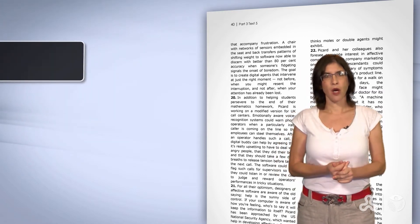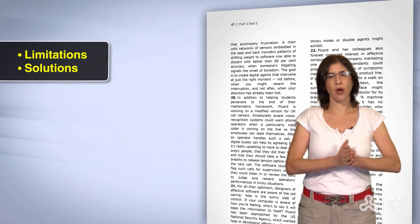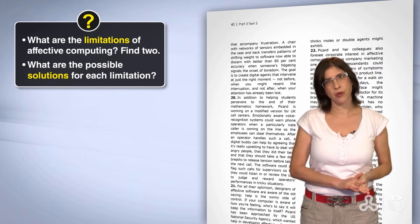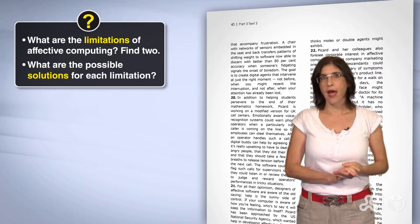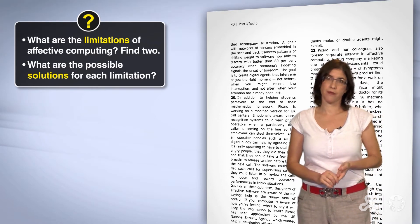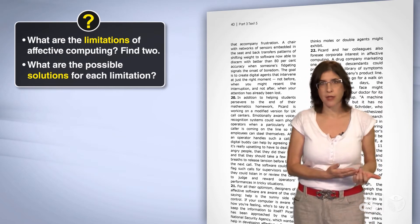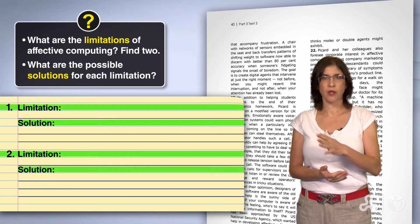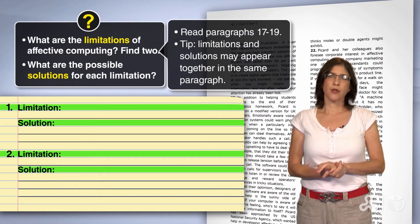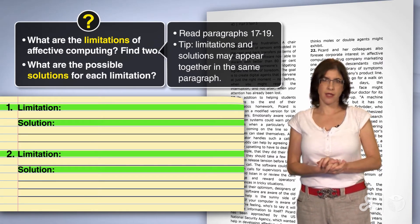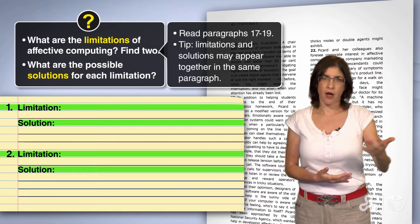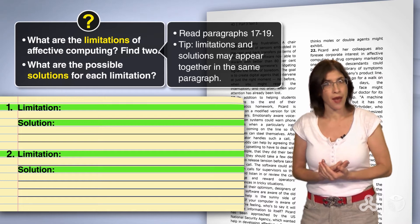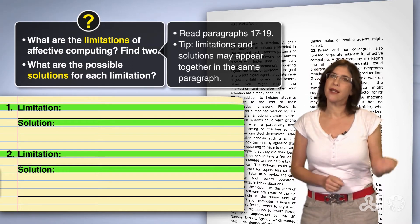Now let's get more specific. We know we will see limitations and we know we will see possible solutions. So here's our question: What are the limitations of effective computing? Find two. And what are the possible solutions for each limitation? Write your answer like this — one: limitation, solution. Two: limitation, solution. To answer, read paragraphs 17 through 19. We will not focus on paragraph 20 and onward. Also, tip: limitations and solutions may appear together in the same paragraph, so read carefully. Press pause and come back when you're ready.